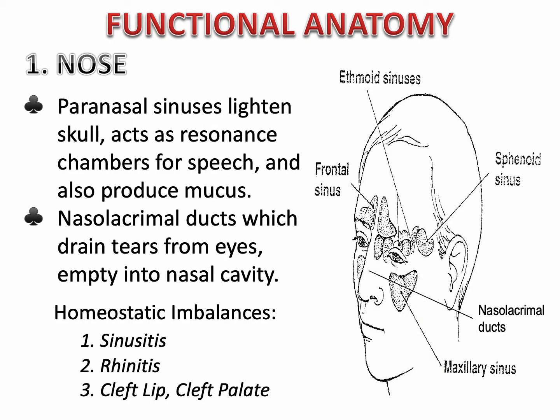Sinuses are open areas of the skull. Paranasal sinuses lighten the skull, act as resonance chambers for speech, and produce mucus. We have the frontal sinus, sphenoid sinus, ethmoid sinus, and maxillary sinus. Sinusitis can occur because these sinuses have a direct pathway down to the nasal cavity, making them susceptible to infection. The common site is the frontal sinus, usually developing in late childhood.